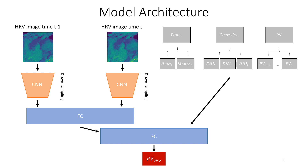We describe here the overall architecture of our best model. First, we have two convolutional neural networks, or CNNs, which take as input a satellite image at time t-1 and a satellite image at the current time t. The CNNs downsample the images and feed their output into a first set of fully connected layers, or FC. Our hope is that this first set of FC layers is able to learn interactions between the two images, like for example the movement of clouds. This first set of FC then feeds its output, together with additional data, into a second set of fully connected layers, which finally outputs the prediction at time t plus p.